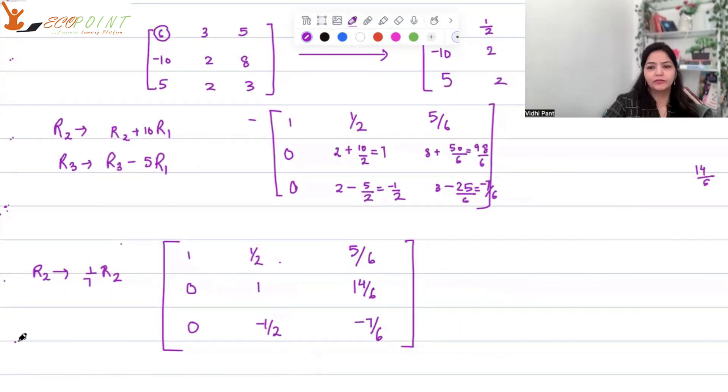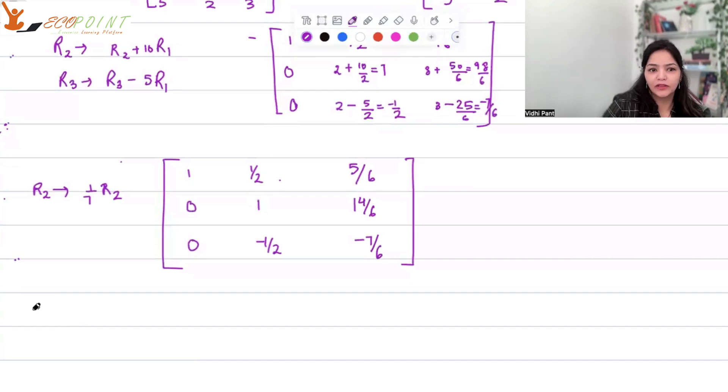So what we will do here is R2 goes to 1 by 7 R2 - taking 7 common so you will get 0, 1, 14 by 6. 1 by 7 of 98 by 6 will be 14 by 6, and your last row is 0, minus half, minus 7 by 6. The last operation R3 goes to R3 plus half of R2. This will lead you to 0, 1, 14 by 6, 0, 0, 0. So the last row is 0. So how many linearly independent rows you have?